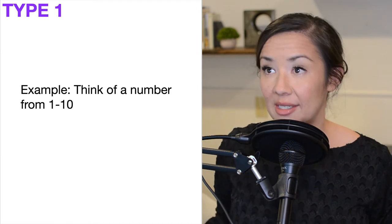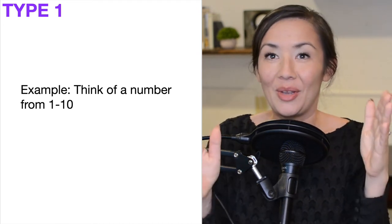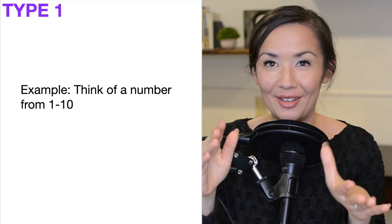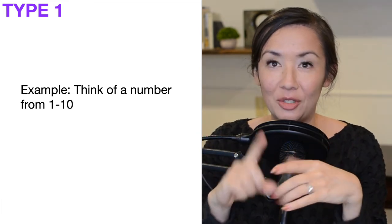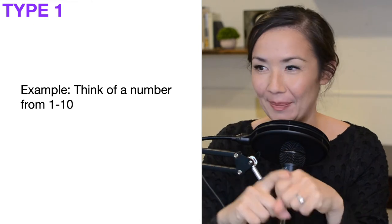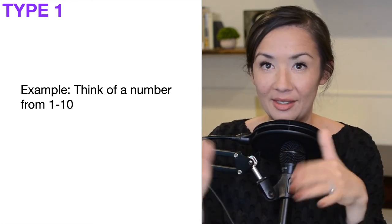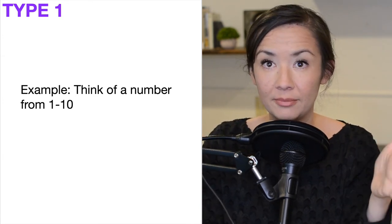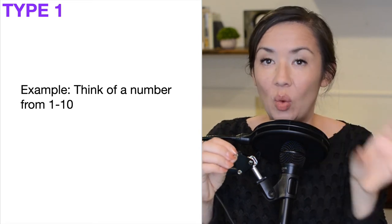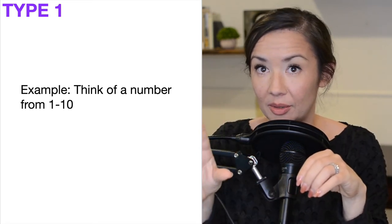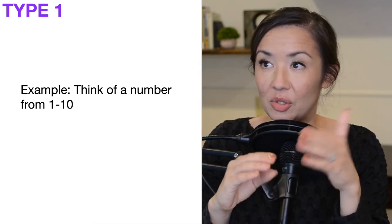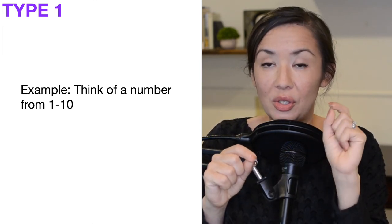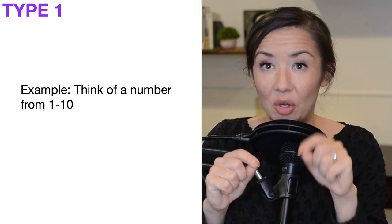Now let's do an example for Type 1 processing. I'm going to break everyone into two groups. Think of a number between one and ten. If it's even, you'll be in one group; if it's odd, you'll be in another. The even group will read the next slide while the odd group closes their eyes, and vice versa.